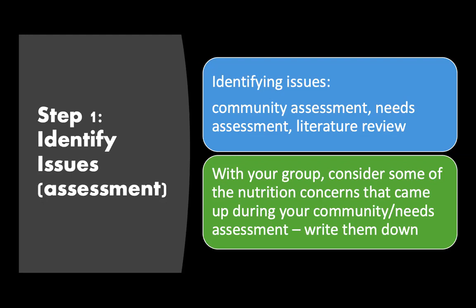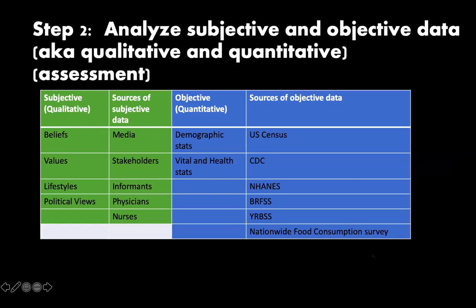The next step is the literature review, which is also part of the assessment process — gathering research about the population. Step two is to analyze subjective and objective data, otherwise known as qualitative and quantitative data. Qualitative means actually talking to people — asking students how they feel about their food security, whether they have food, somewhere to live — really digging in and getting opinions. Quantitative means looking at the numbers, like U.S. Census data and CDC information.